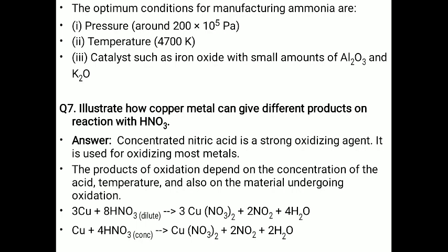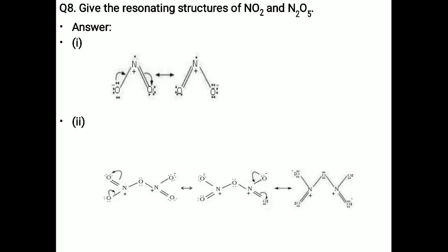Question 8: Give the resonating structures of NO2 and N2O5. This is an important question — this type of question will occur in your board exams. For resonating structures, first of all you have to draw the diagram, then show the resonance — how the electrons are shared, how the bond is transferred, and how the negative charge comes up.